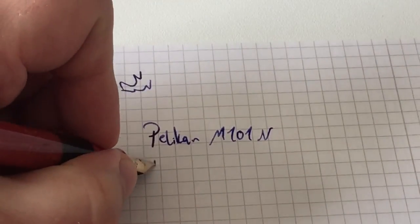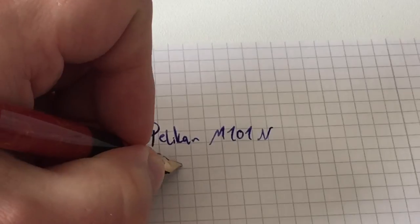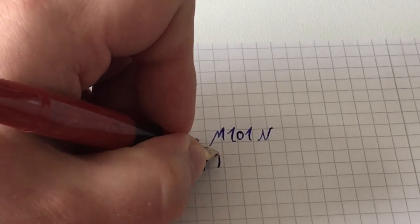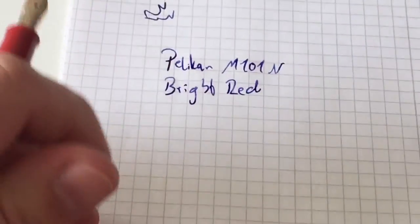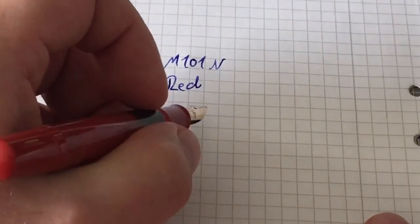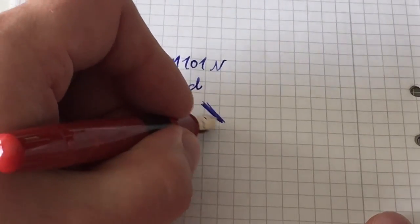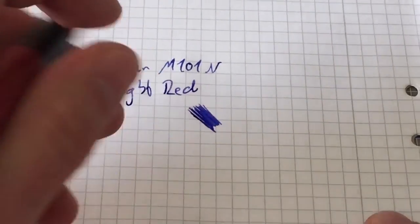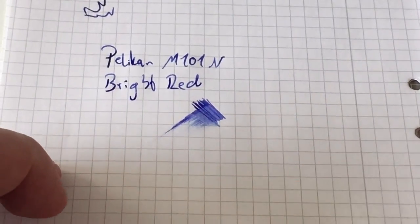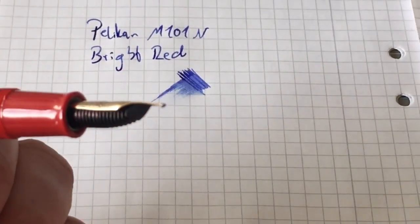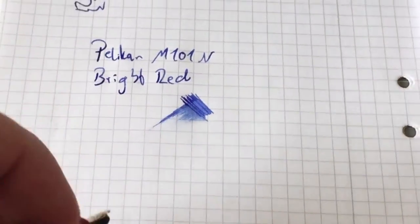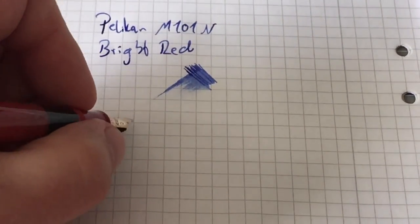Pelikan M101N Bright Red. I have filled this pen with the Pelikan 4001 ink that came with it. It's, as most Pelikan pens, a rather wet pen. And yeah, I was surprised, as said, by the stub nib characteristics of the pen, and I'm going to demonstrate that for you here.